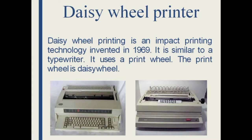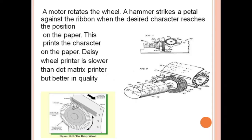The daisy wheel printer is also an example of an impact printer. This printing technology was invented in 1969 and is similar to a typewriter. It uses a print wheel called a daisy wheel. A motor rotates the wheel, and a hammer strikes a paddle against the ribbon when the desired character reaches the correct position on the paper, printing the character. The daisy wheel printer is slower than the dot matrix printer but produces better quality output.